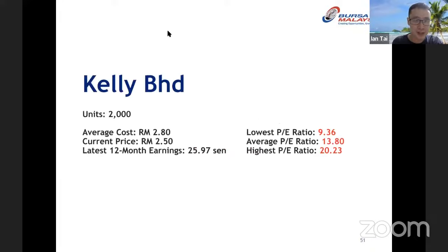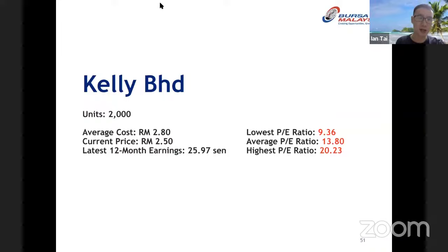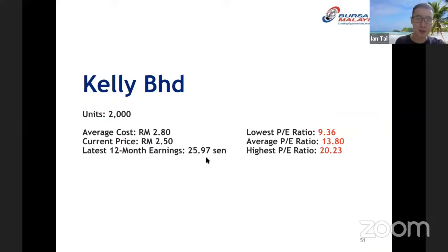Now let's move on to Kelly Berhad — I'll let you decide on your own. First, calculate the latest PE ratio based on the current price and put it in the chat box. Jennifer Louis has calculated 9.63. The correct answer is 9.63: take current price RM2.50 divided by RM0.2597. Now compare it with the lowest, average, and highest PE ratio and start voting.